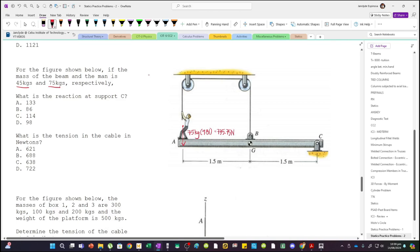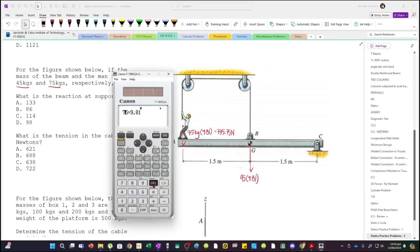And then the weight of the beam acts at the center, so this is 45 multiplied by 9.81, we have 441.45.